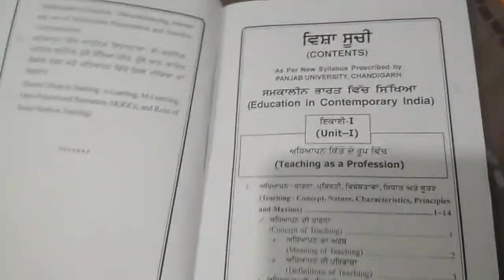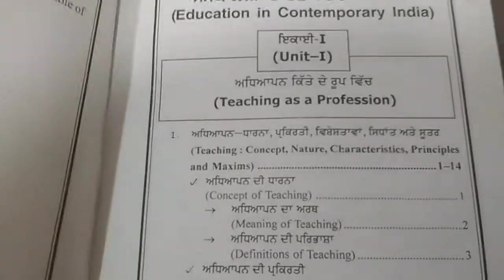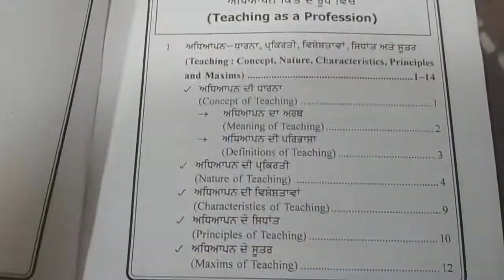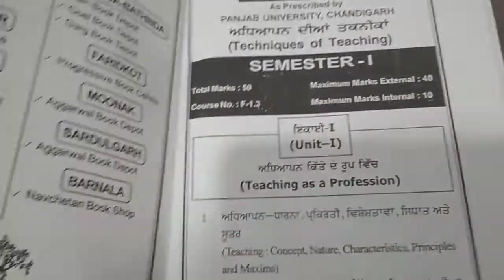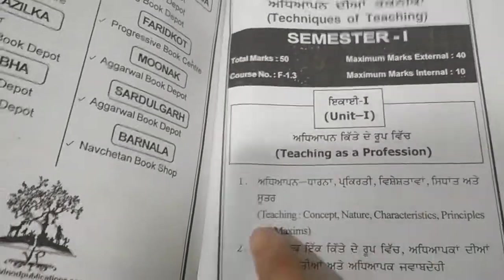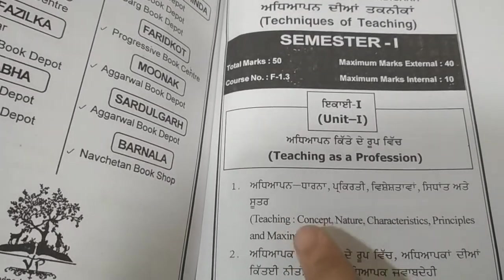The contents are clearly mentioned. First, Teaching as a Profession is listed with subtopics like teaching concept, nature, characteristics, and principles. We can cross-check with the syllabus — the same things are there: teaching concept, nature, characteristics, principles. So the contents cover everything which was in the syllabus.